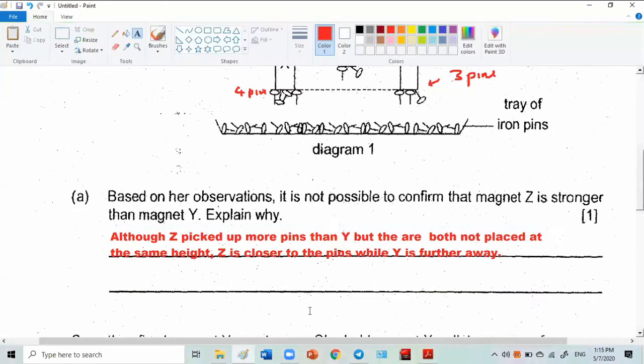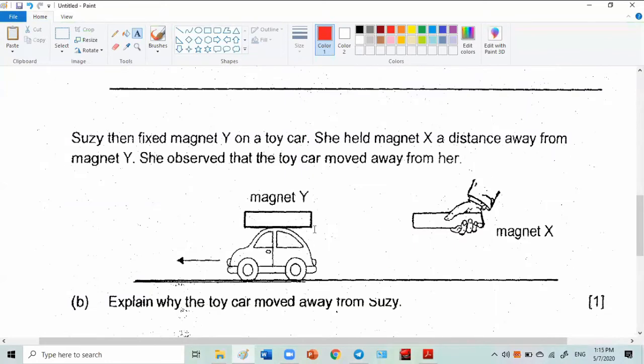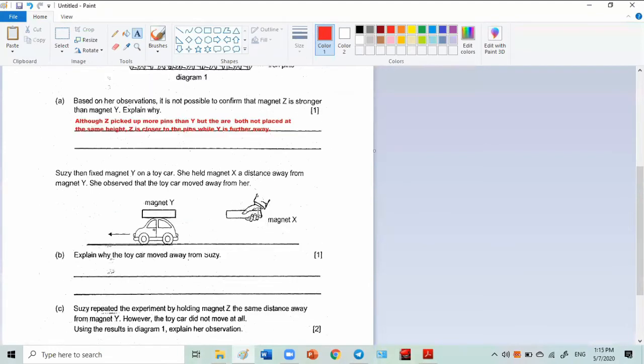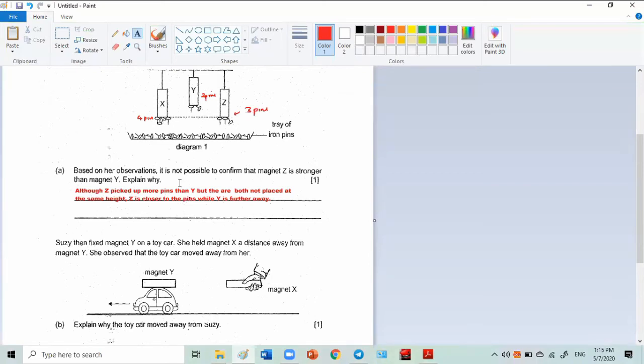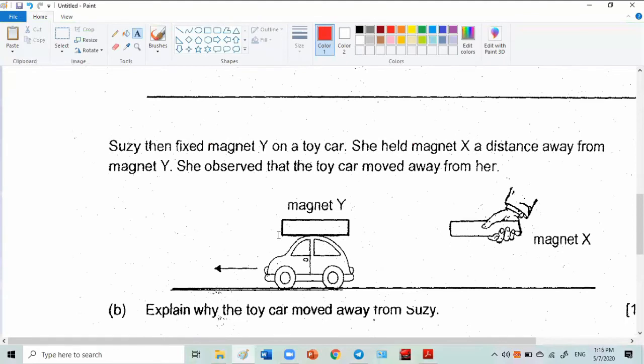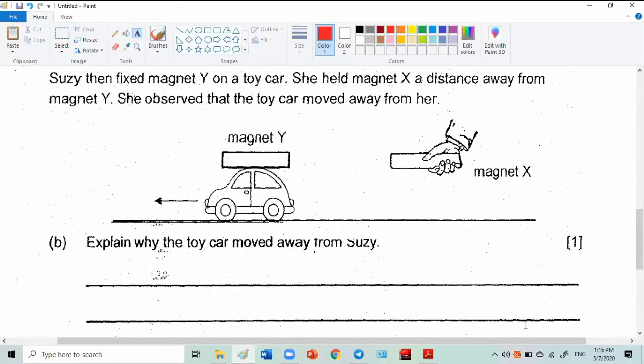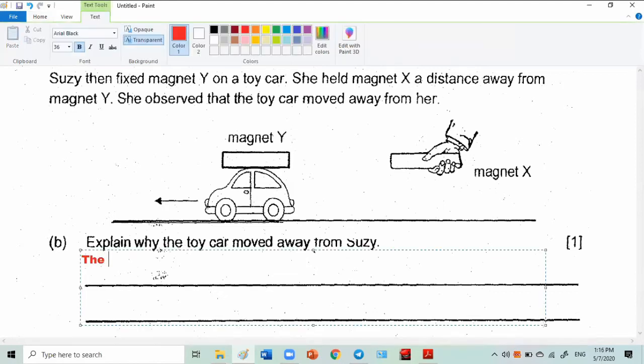Suzy then fixed magnet Y onto a toy car. She held magnet X a distance away from magnet Y. She observed that the toy car moved away from her. Explain why the toy car moved away from Suzy.